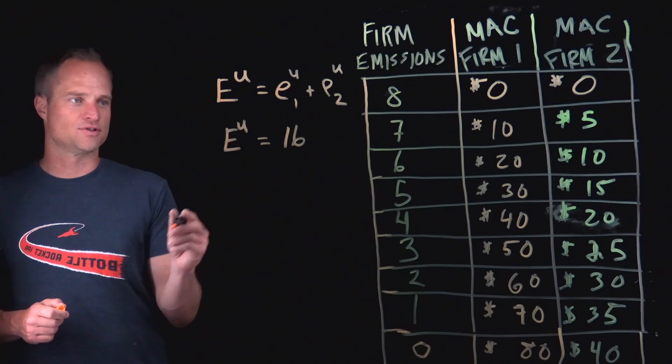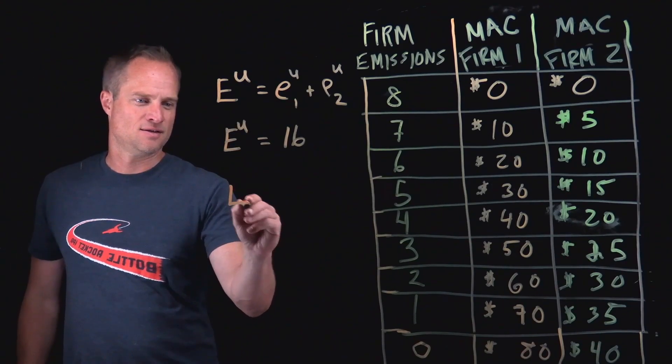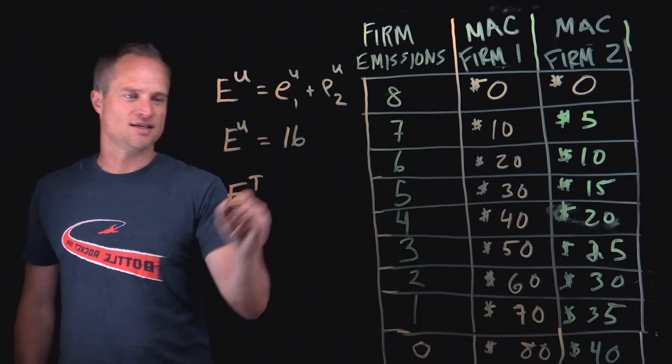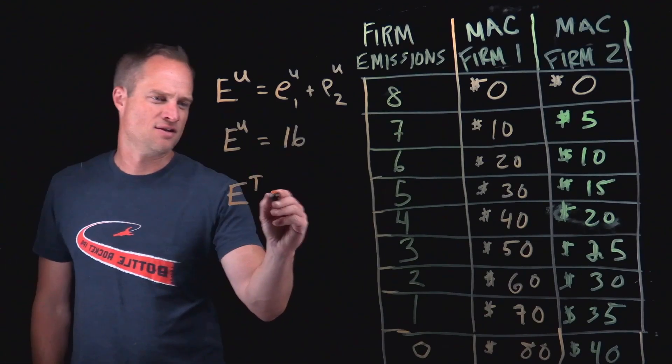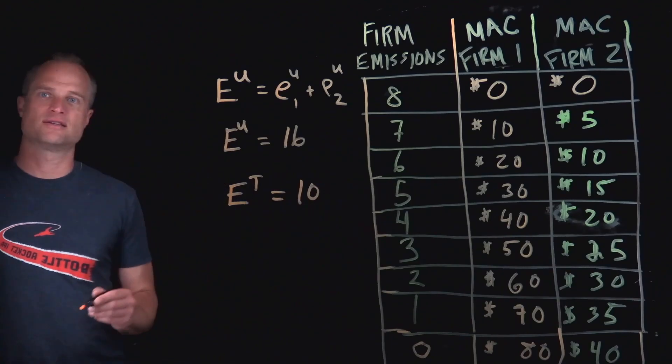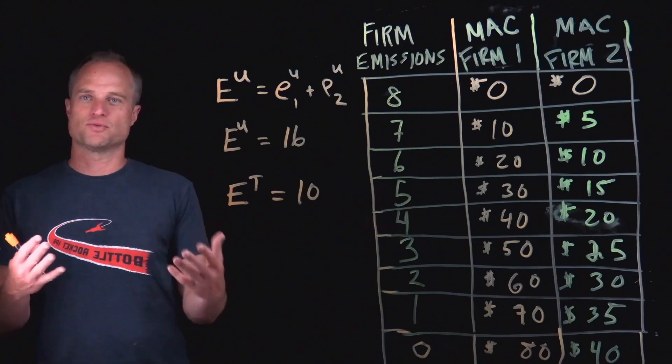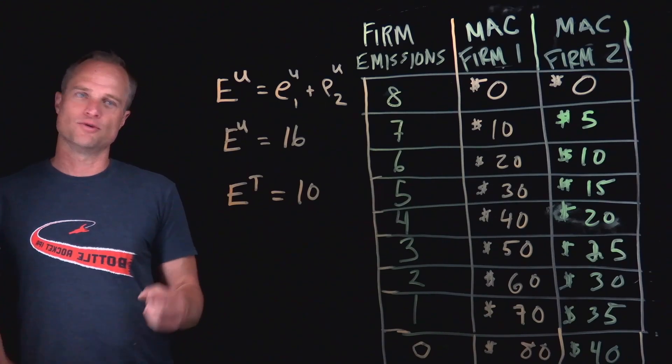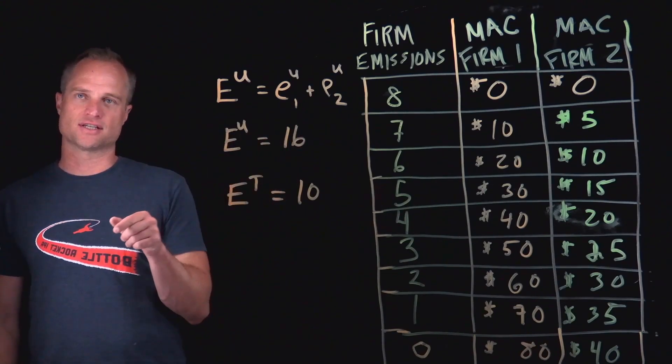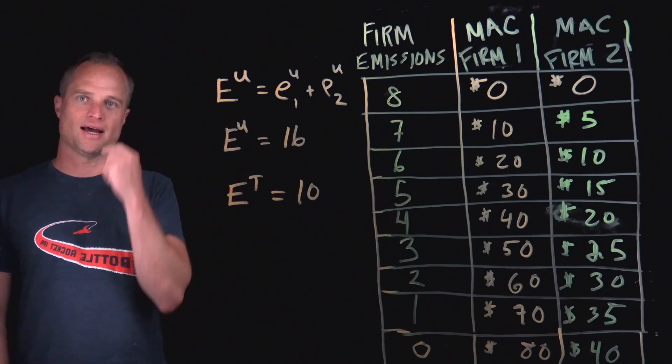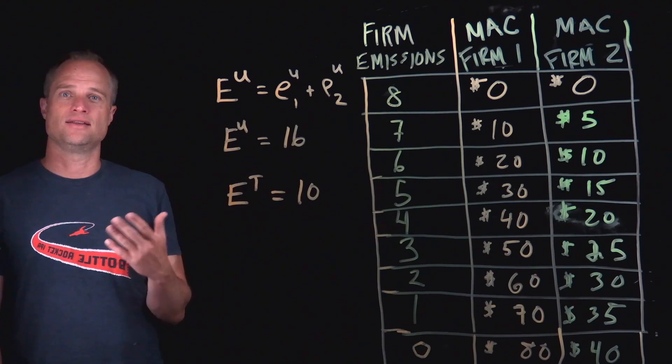Now let's think about reducing emissions from 16 to, we'll call this T, our emissions target, to 10. So we want to abate six units of emissions. So using the table, what's the cheapest way, the least cost way, to move from the unregulated state of the world, 16 units of pollution to 10? How do we abate six units in the cheapest way?